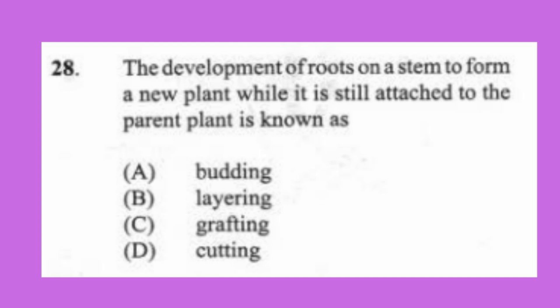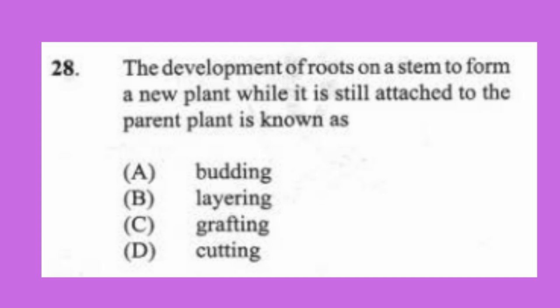Question 28: The development of roots on a stem to form a new plant while it is still attached to the parent plant is known as (a) budding, (b) layering, (c) grafting, (d) cutting. The answer is B, layering. There are two types of layering: ground layering and air layering. The one called circumposing or marcotting is air layering.